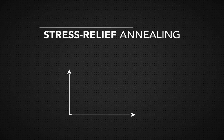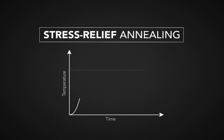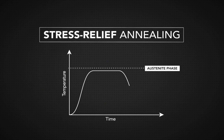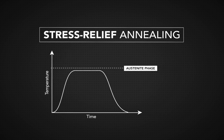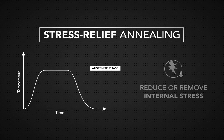Then, the stress relieving process keeps metal at a heat level just below the austenite phase. This heat treatment cuts back on internal stress and ensures that metal won't distort.